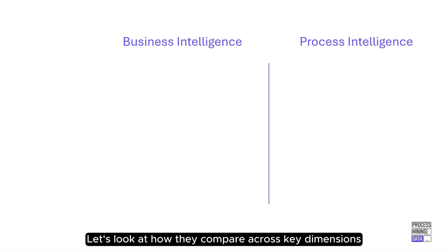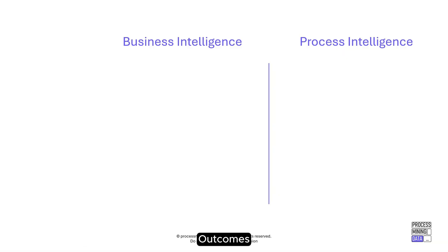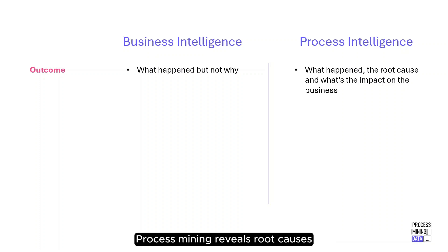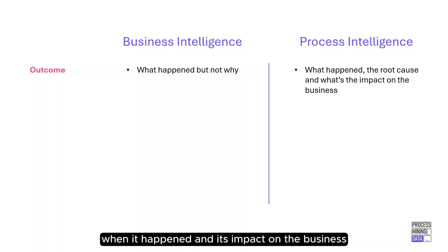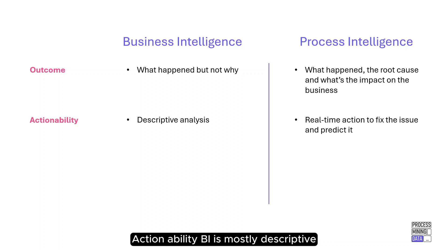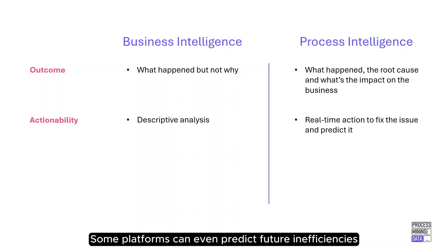Let's look at how they compare across key dimensions. Outcomes: BI shows you that a problem happened — say, a dip in sales — but not why. Process mining reveals root causes, pinpointing what went wrong, when it happened, and its impact on the business. Action ability: BI is mostly descriptive, while process mining enables real-time action. Some platforms can even predict future inefficiencies and suggest fixes before they occur.